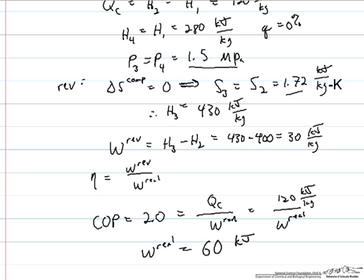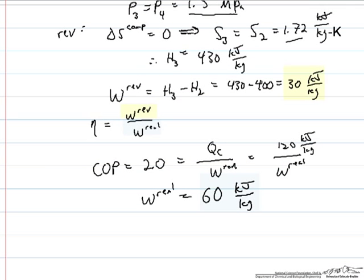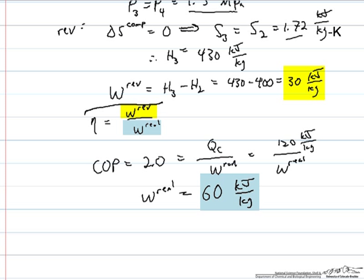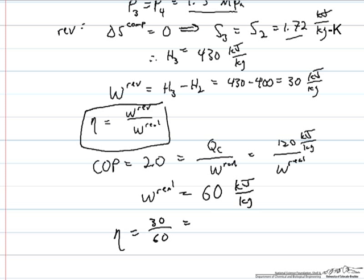Now based on our efficiency, which is defined above as the reversible work over the real work, we just take the 30 divided by 60 and that gives us an efficiency for our compressor of 50%. This basically helps us define the point 3 prime on our diagram above.